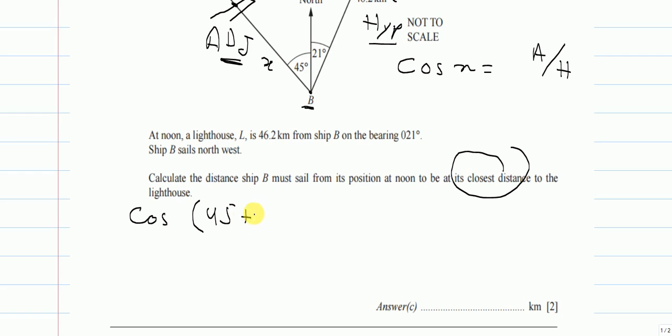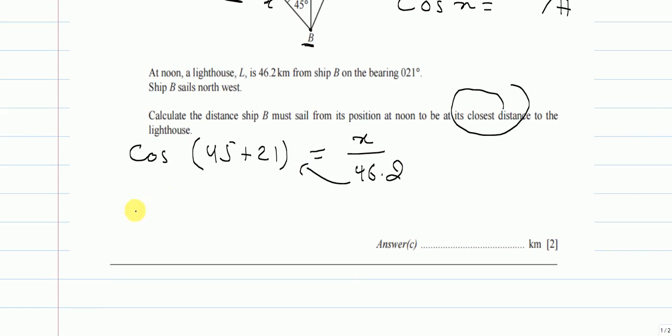Cos 66 degrees equals adjacent, which is what we are looking for, over hypotenuse which is 46.2 kilometers. Then this will be multiplied on this side to have X as the subject of the formula. So we will have cos 66 degrees multiplied by 46.2 equals X.